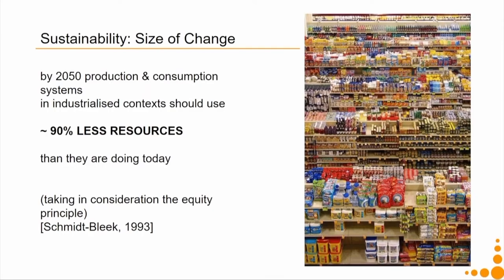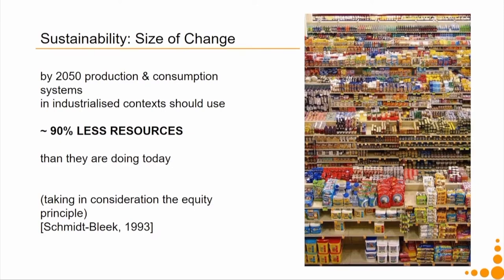The amount of material and energy we consume requires 1.7 earths — we do not have that extra 0.7 earth. Another research says that by 2050, production and consumption systems in all industrialized contexts should use about 90 percent less resources than they do today. Just imagine how we achieve that — that is the challenge in front of all current and future designers and engineers, and that is why we are doing this course.